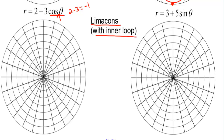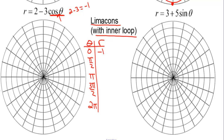Double the coefficient of theta — that's what we'll count by. Theta values: 0, pi over 2, pi, 3 pi over 2, and 2 pi. Plugging in 0: cosine of 0 is 1, so 2 minus 3 is negative 1 — we get the negative right away. Cosine of pi over 2 is 0, so r is 2. Cosine of pi is negative 1, so that gives negative 1 times negative 3, which is positive 3, so r is 5. At 3 pi over 2, r is 2, and at 2 pi, r is back to negative 1.